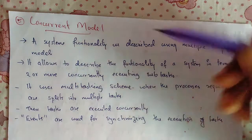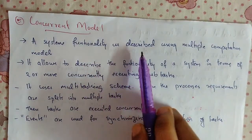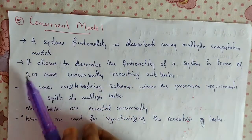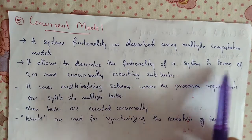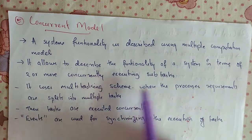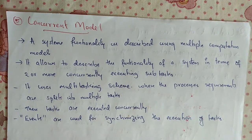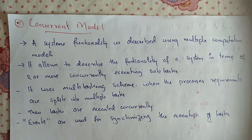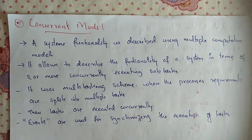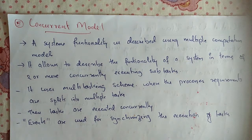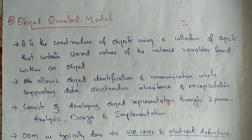Next, the concurrent model — a system's functionality is described using multiple computation models. It allows describing functionality in terms of two or more concurrently executing subtasks. In a system with multiple tasks running simultaneously, a multitasking scheme is used where process requirements are split into multiple tasks executed concurrently. Events are used for synchronizing the execution of these tasks.